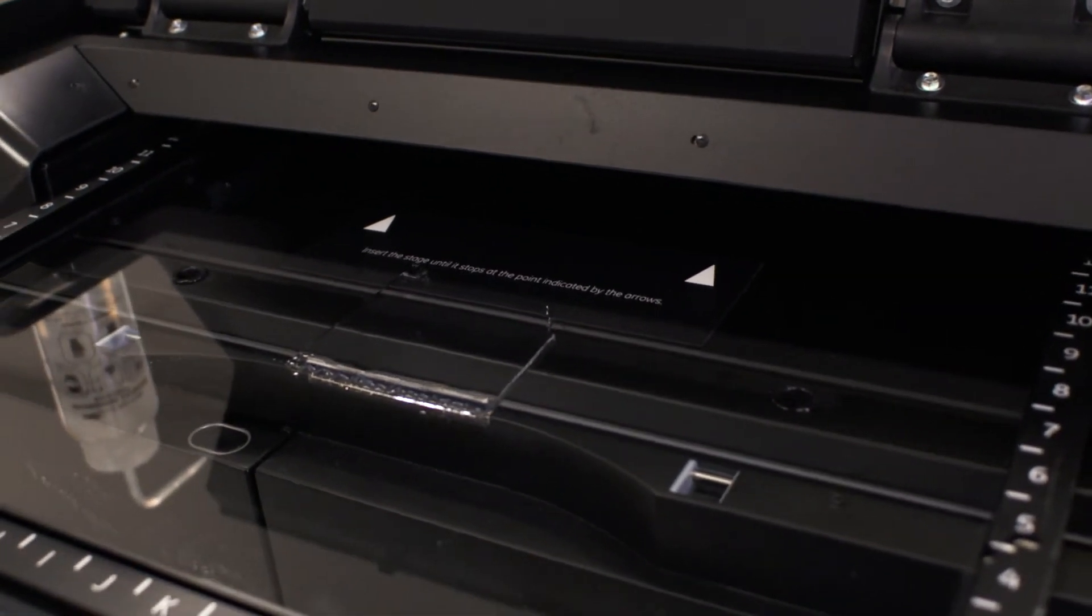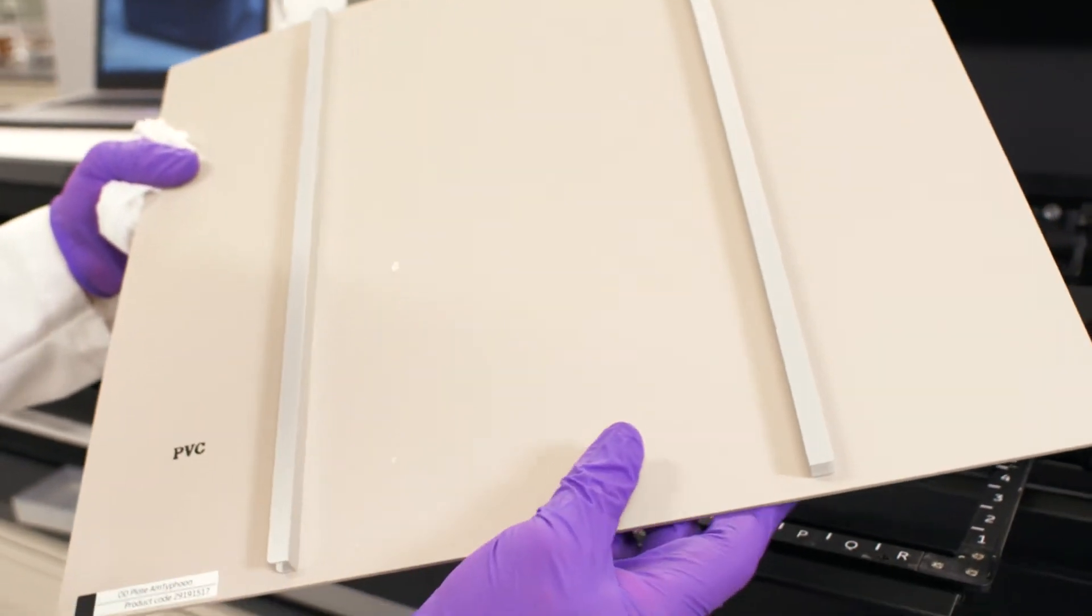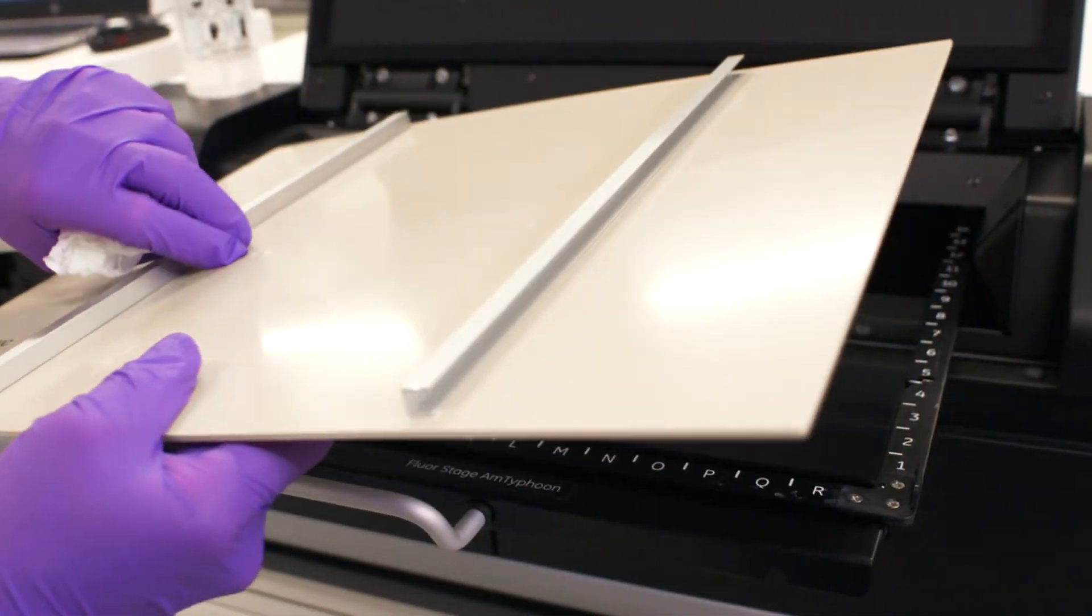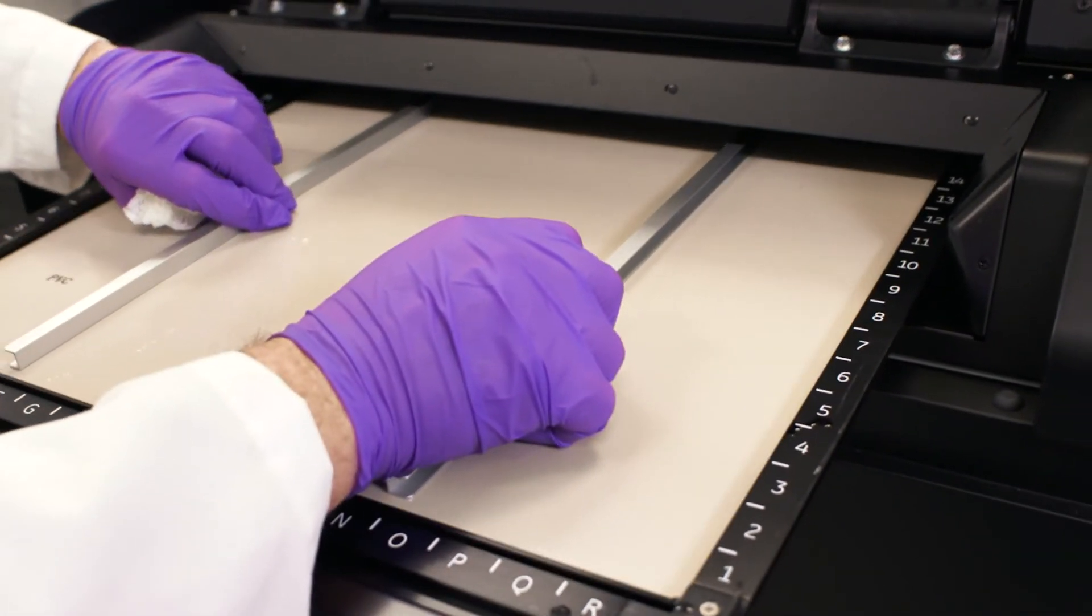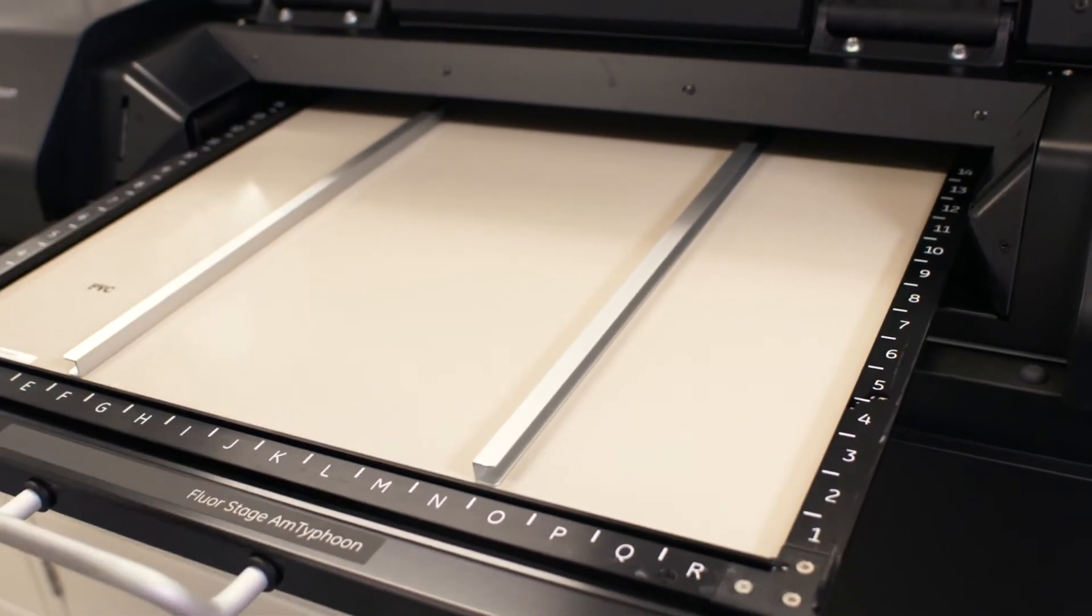We then need to use this beige board, which you'll see is called the OD plate. It has two handles which we're going to use to place this on top of our sample. This could be a Coomassie or a silver stain gel. That's just going to sit in place like so.